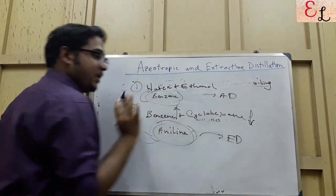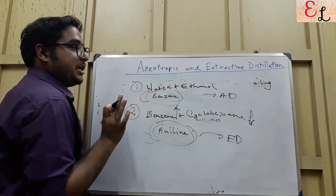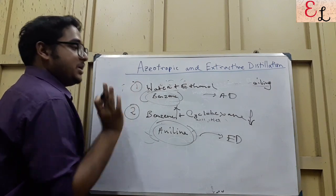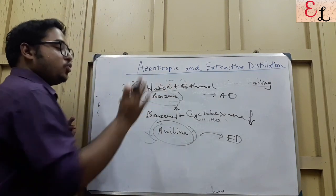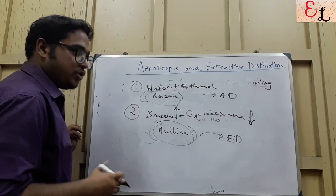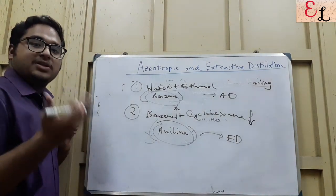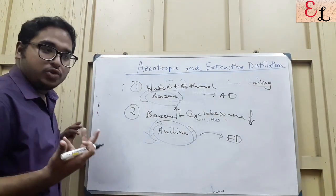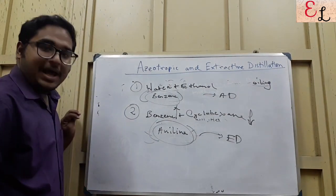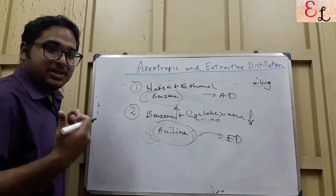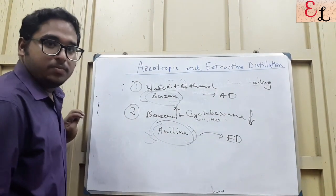Both azeotropic and extractive distillation are followed when A and B cannot be separated by normal distillation. We have not gone into the detailed approach — you can always refer to other resources if you want. If you like this work, please like, subscribe, comment, and share. That's it for today, thank you.